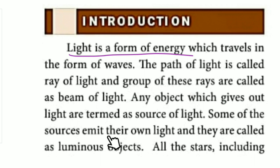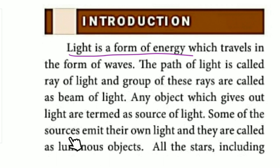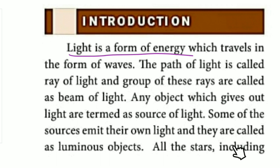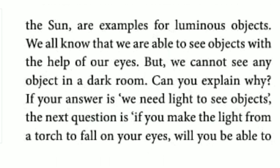Some sources emit their own light and they are called luminous objects. For example, the sun is a star. All stars, including the sun, are examples of luminous objects.